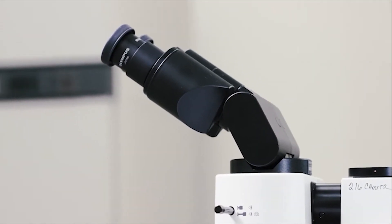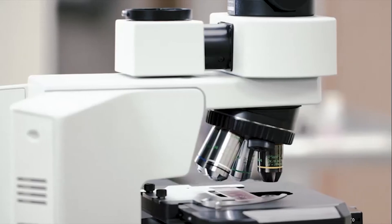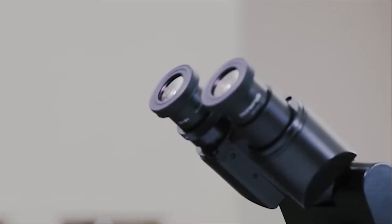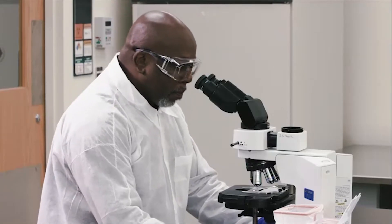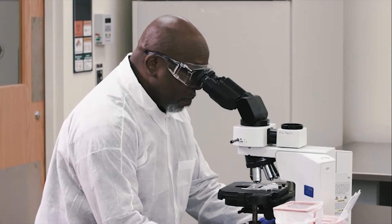The head contains the oculars and the nose piece, which hold the objective lens. The oculars are the eyepieces of the microscope. They contain lenses that have a magnification of 10x.